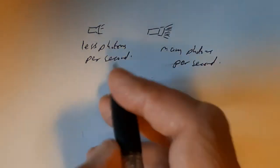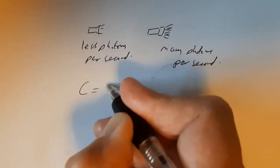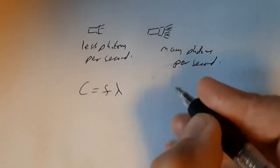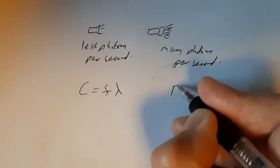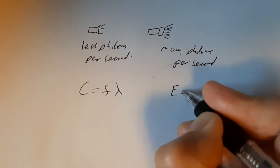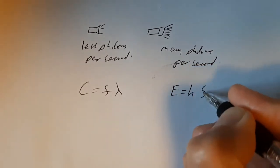There are a few bits of maths you need to know. We're still going to be using C = fλ — I went through that in the last video. But we've also got a new one: how much energy does a photon have? We use the equation E = hf.